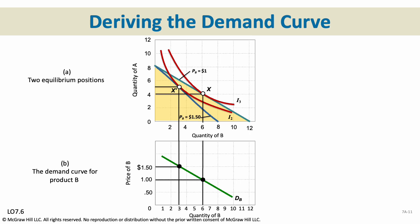When the price of product B increases from $1 to $1.50, the equilibrium moves from point X to a new point X'. The reason is we need a whole new budget line because B got more expensive — we can no longer buy up to 12 units of B, only up to 8. So we have a new budget line and a new equilibrium point. As product B gets more expensive, there's going to be less demand for it. Originally, demand was 6 units at $1; now it has fallen to 3 units. If something gets more expensive, the quantity demanded always drops. And that takes us to the end of the appendix slides.